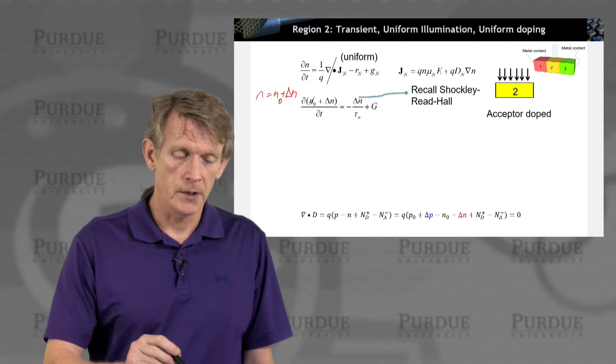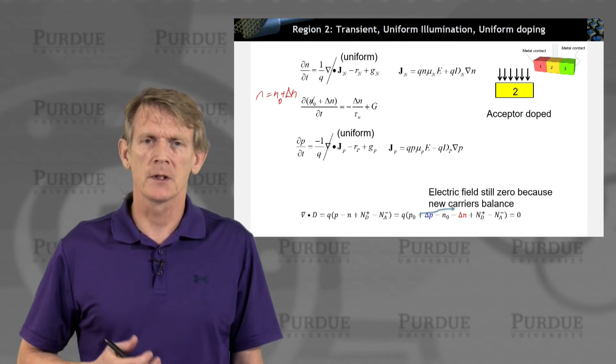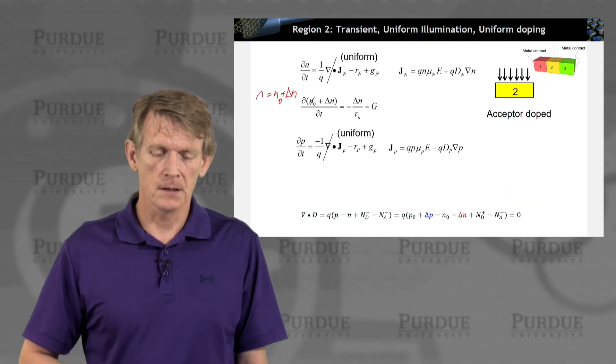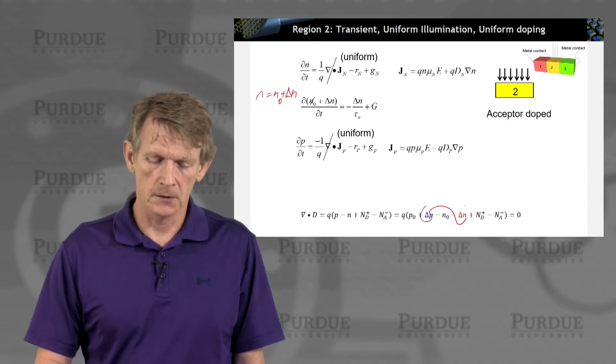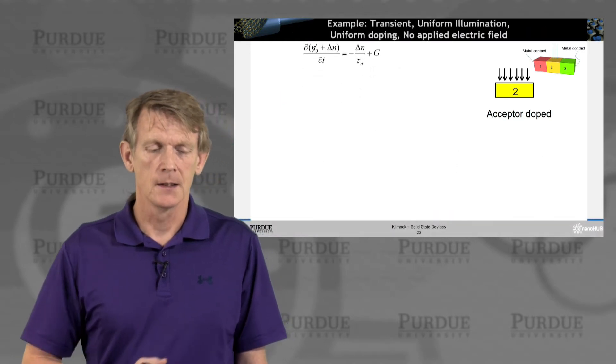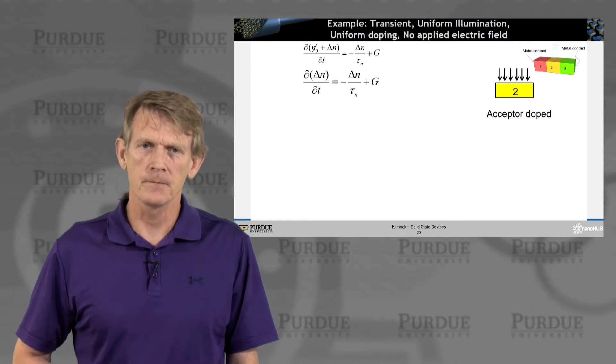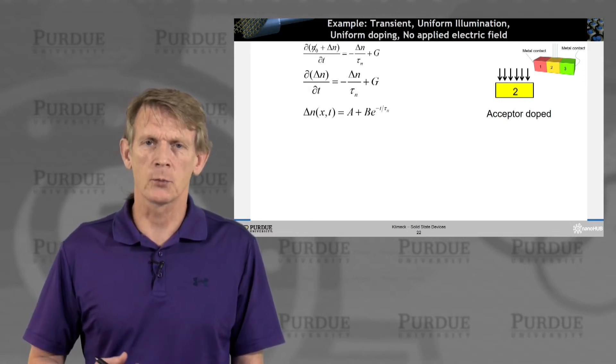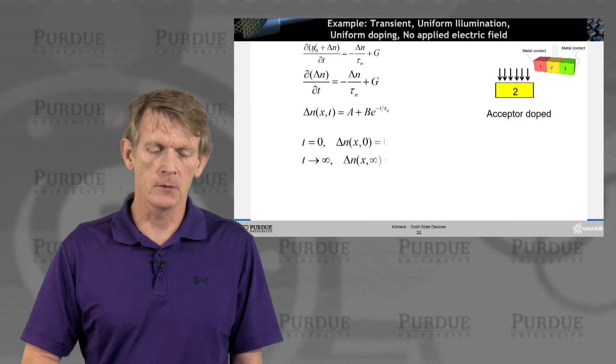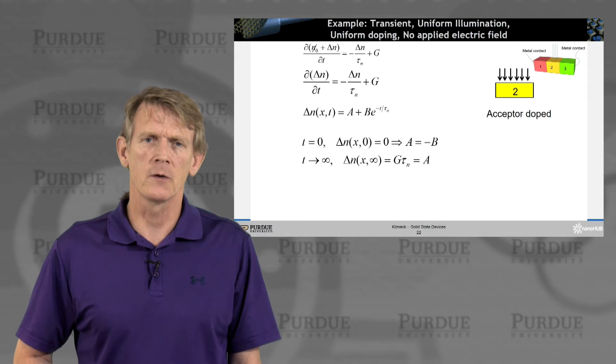All right. And so we can, okay. Now for holes, we can do the same thing. We assume that there is no spatial gradient. And we have the Poisson equation on the bottom that is satisfied where both electrons and holes balance each other. So now let's take this expression for the electron density as a function of time. And this is the minority carrier density that is relaxing with a minority carrier lifetime. And we can solve this differential equation with a simple exponential. So you must be very familiar with this differential equation.